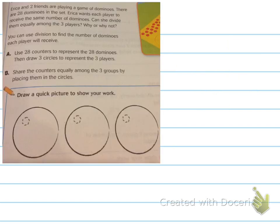Let's take a look at our first word problem. Erica and two friends are playing a game of dominoes. There are 28 dominoes in the set. Erica wants each player to receive the same number of dominoes. Can she divide them equally among the three players? Why or why not? You don't need to write all this down, just the important information. So Erica and two friends, 28 dominoes, each player to receive the same number. Can she divide them equally?